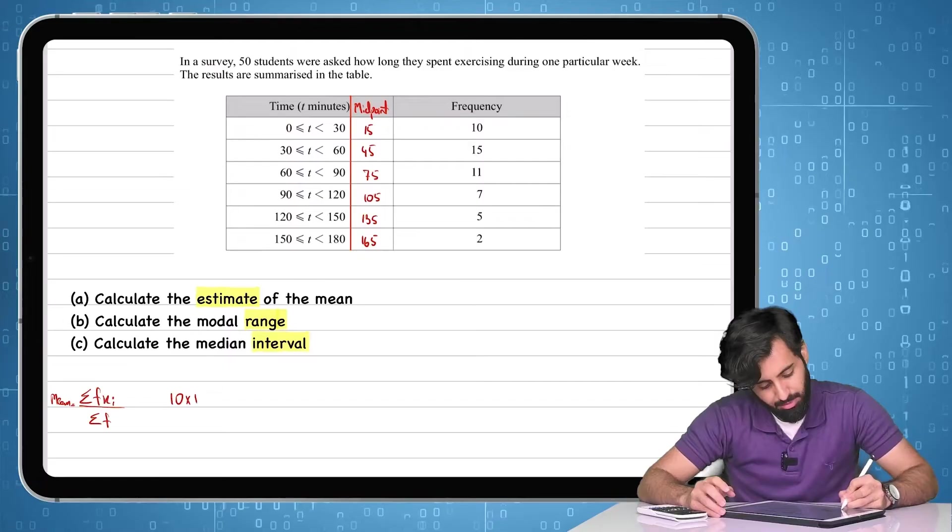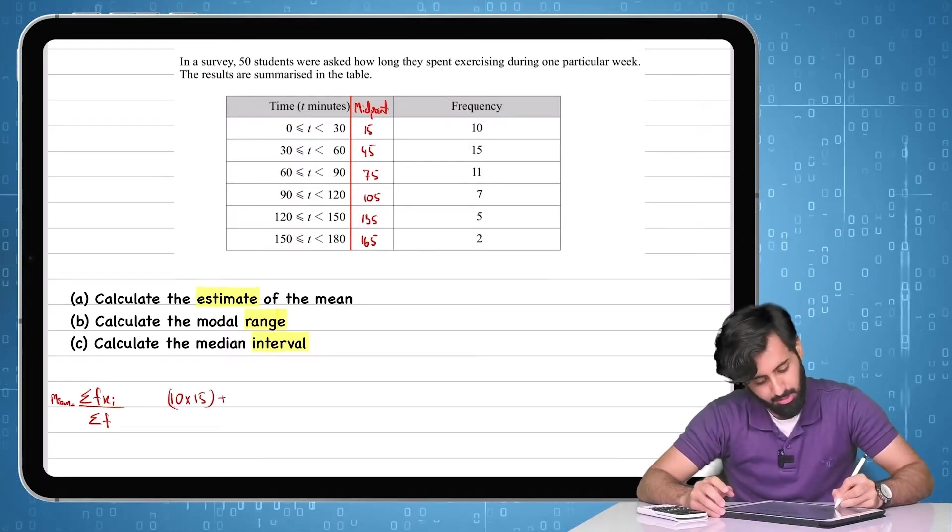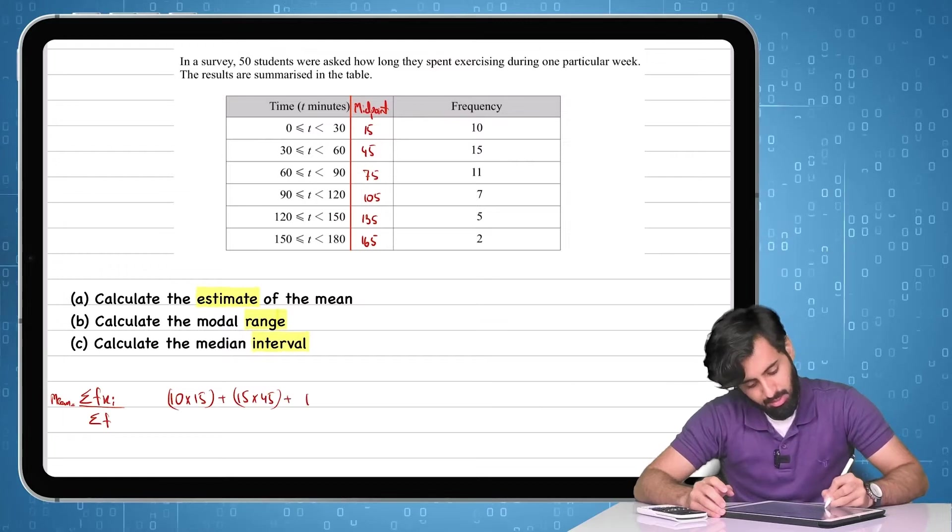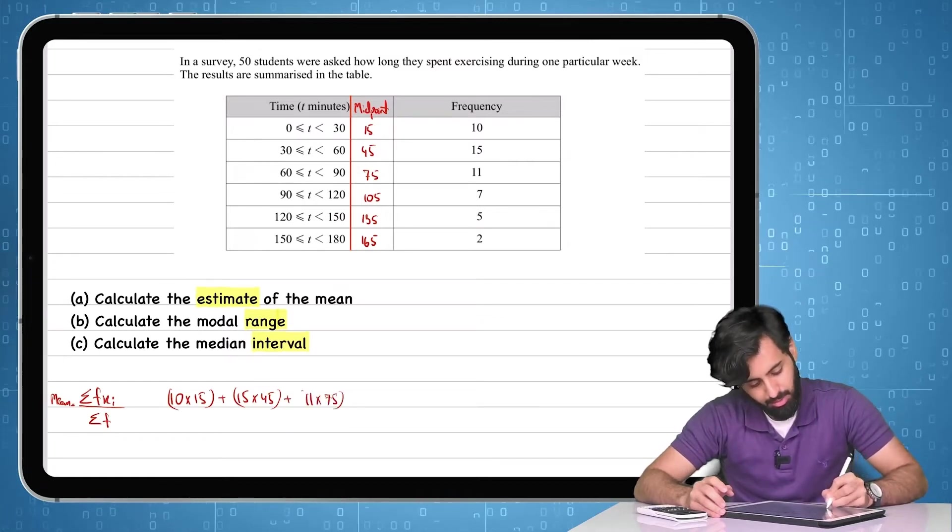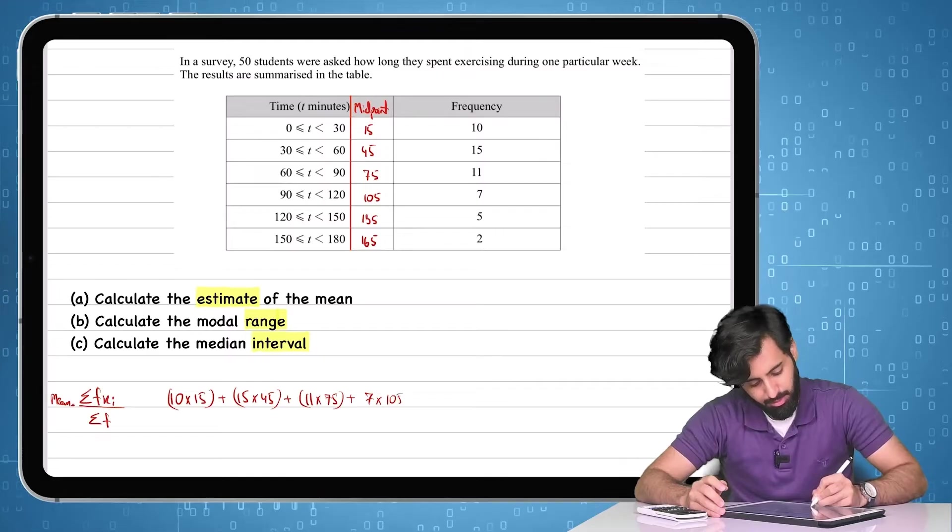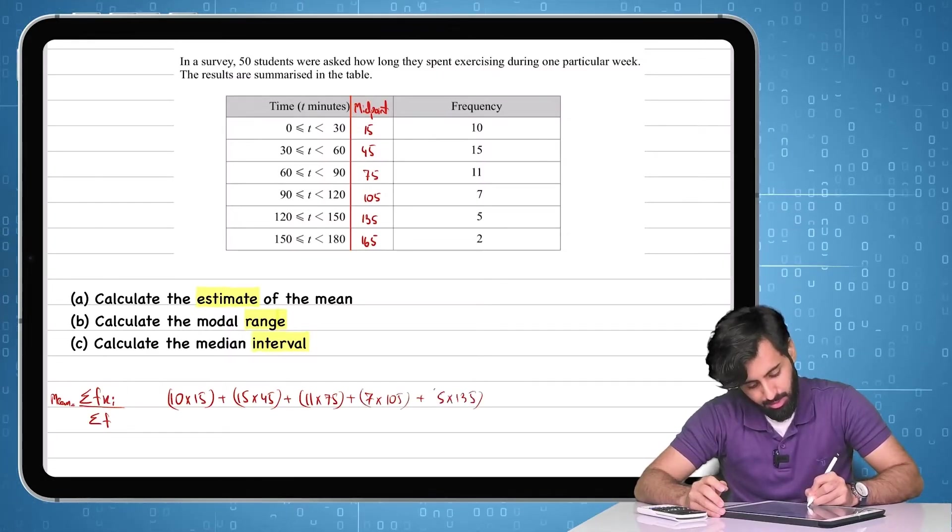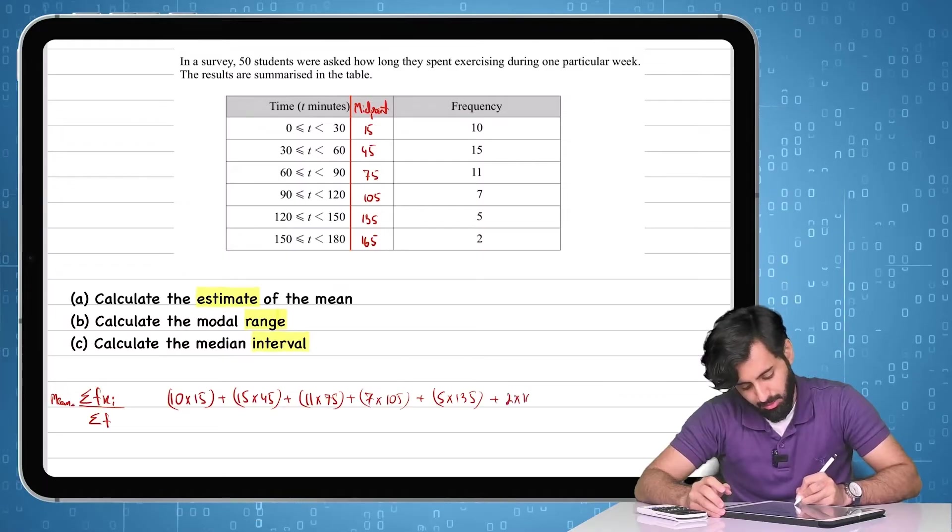Now 10 times 15, plus 15 times 45, plus 11 times 75, plus 7 times 105, plus 5 times 135, plus 2 times 165.